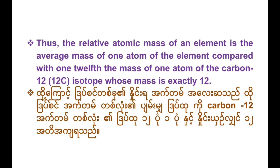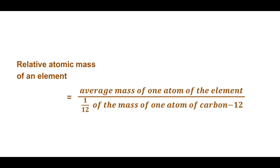The relative atomic mass of an element is the average mass of one atom of the element compared with one-twelfth the mass of one atom of the carbon-12 isotope, whose mass is exactly 12. Thus, the relative atomic mass of one atom equals the average mass of one atom of the element divided by one-twelfth of the mass of one atom of carbon-12.